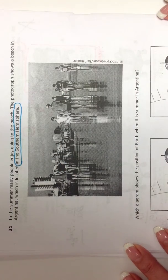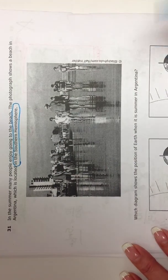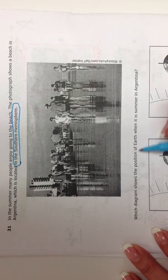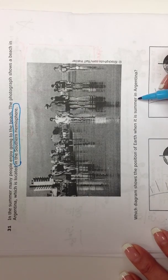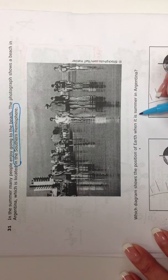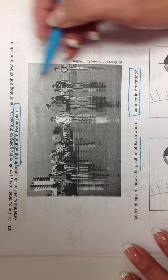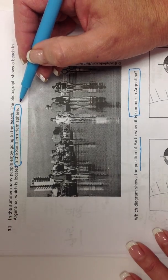Okay. Then it goes to say, which diagram shows the position of earth when it is summer in Argentina? So we want to know position of earth when it is summer in Argentina. Well Argentina is in the southern hemisphere.